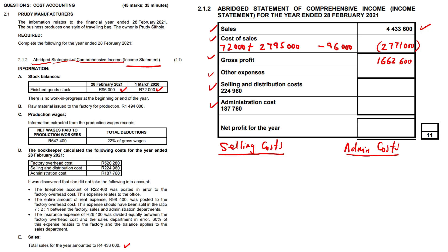We're now proceeding to other expenses, looking at the selling and distribution cost and the admin cost. Let's look at how far we've used data from the question. We've used the closing and opening finished goods balances. No work in process. Raw materials issued to factory - long since been used. Factory wages and production wages do not go in here at all. The selling and distribution cost is given to us as 224,960, and I'm going to bring that into my workings page. The admin cost is 187,760, also on the answer sheet, and I'll bring that into my workings page too.